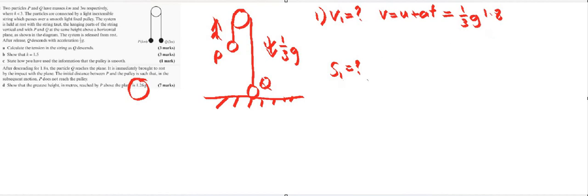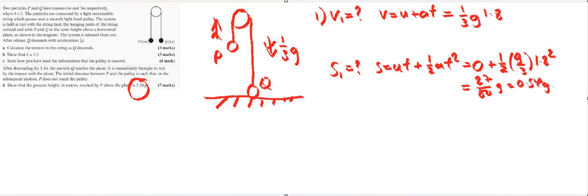And then we need to know how far it falls. We know that s equals ut plus half at squared. Again it was at rest, so ut is zero, and we'll do a half times our acceleration which is g over 3 times a time which is 1.8 squared. So that gives us 27 over 50 g, or 0.54g. Remember, even though that's in terms of g, that's the distance.